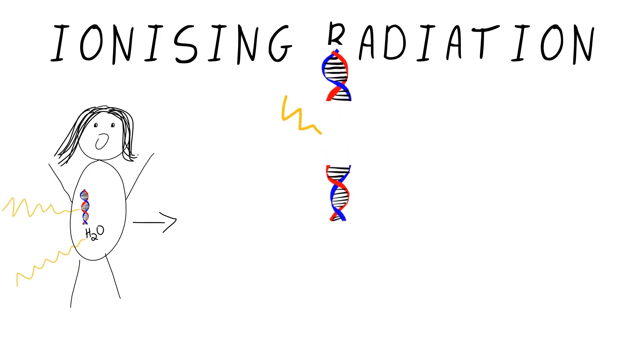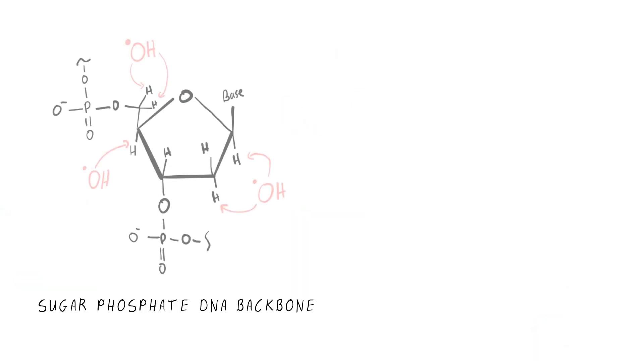or alternatively create highly unstable hydroxyl radicals by removing electrons from water in cells so that the molecule has unpaired electrons. This free radical attacks nucleotides and DNA, causing mutations.